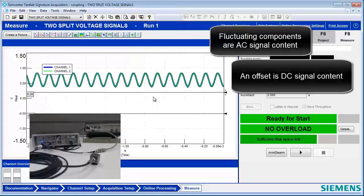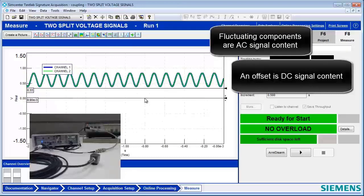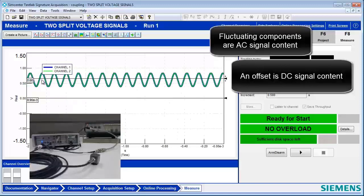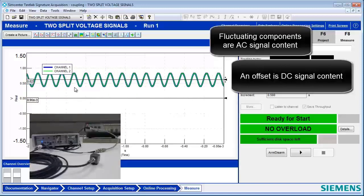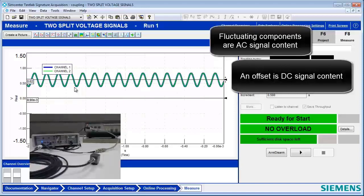We can get an idea of how much that DC offset is. It looks like it's about 0.6 volts or so. So you added a DC offset. This signal really has two components: an offset plus the AC.